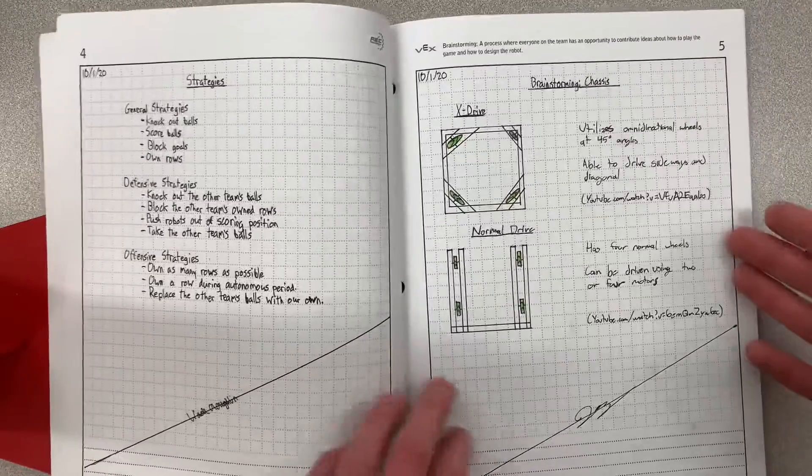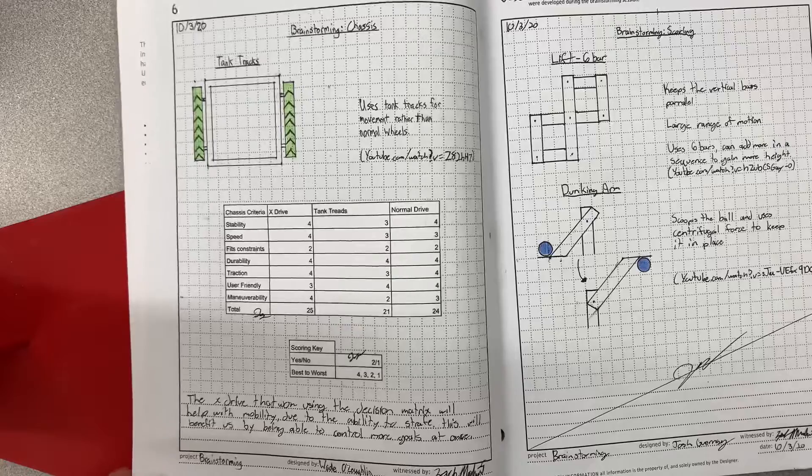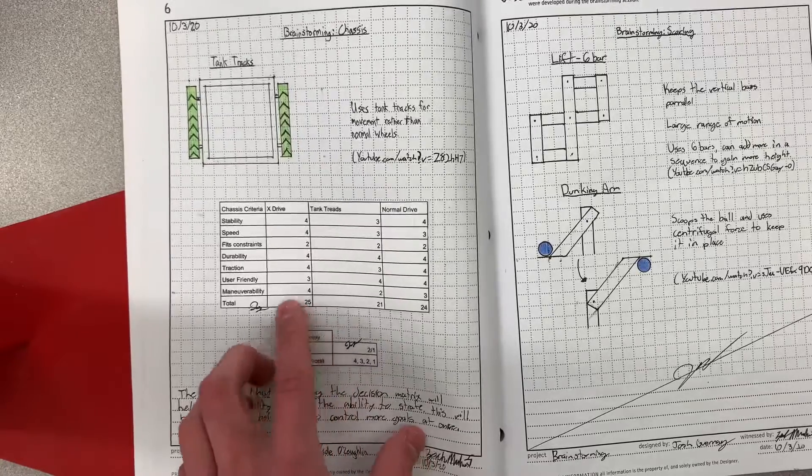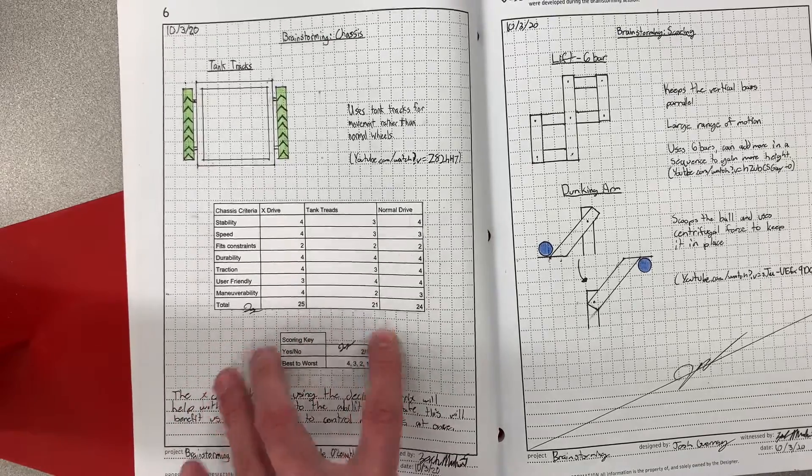And then you can start brainstorming. And to decide on your brainstorming decisions, you come up with a decision matrix. And this will help you figure out what design you're going to use.